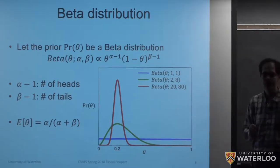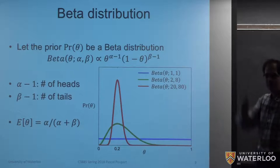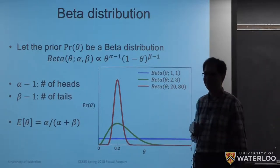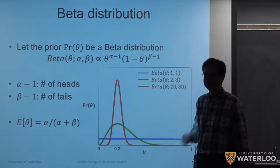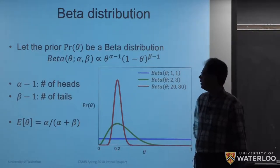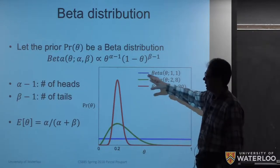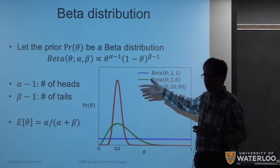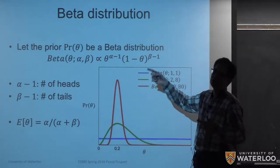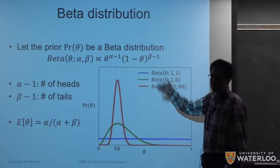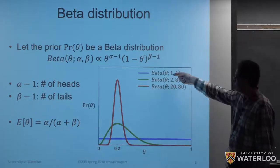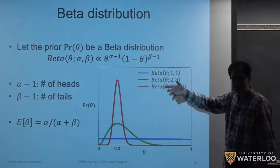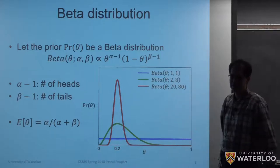A student asks whether the beta distribution is the prior and whether it changes as we observe more data. The instructor confirms: we use the beta distribution as the prior, but it will also be the posterior. What happens is that the posterior corresponds to increasing alpha and beta based on observed flips.